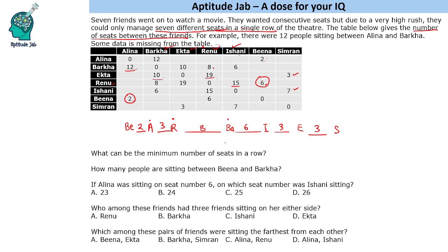Now let's answer the questions. What can be the minimum number of seats in a row? In order to have the minimum number of seats, these people should be sitting at the end points. If Bina and Simran are at the end points, the number will be minimum. Counting the spaces between the 7 people: 2, 3, 5 — 5 plus 8 is 13, plus 6 is 19, plus 6 is 25. So the minimum number of seats could be 32.